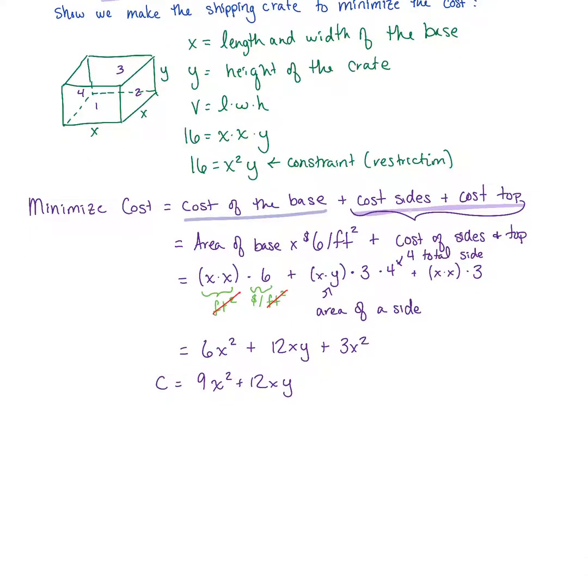This is what we want to minimize. We have an equation in terms of two variables and we want to take its derivative, so that's where that restriction comes in. 16 equals x squared y. We can solve for y and plug 16 over x squared in for our y value, and then we'll have our cost function just in terms of one variable.